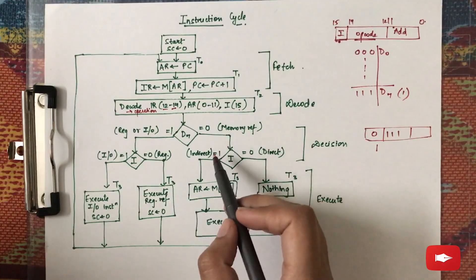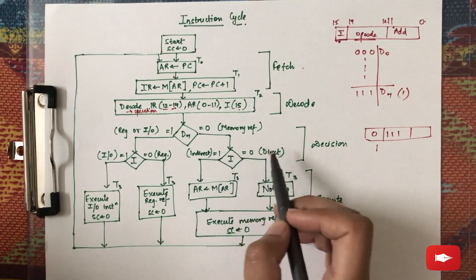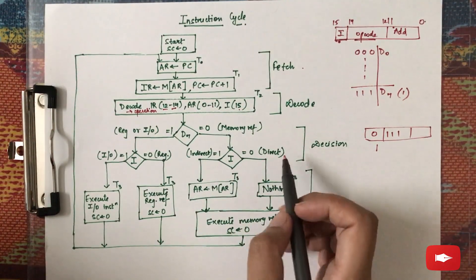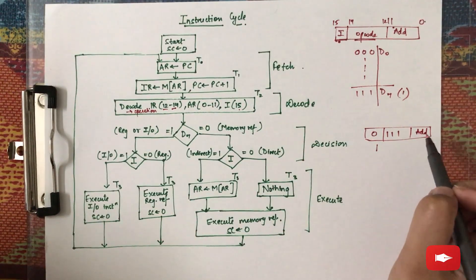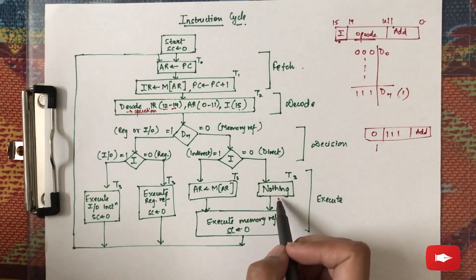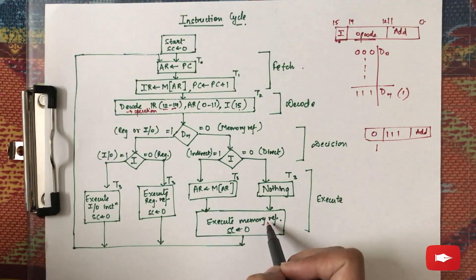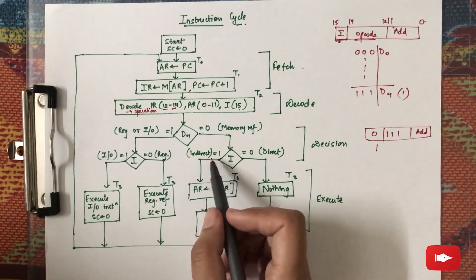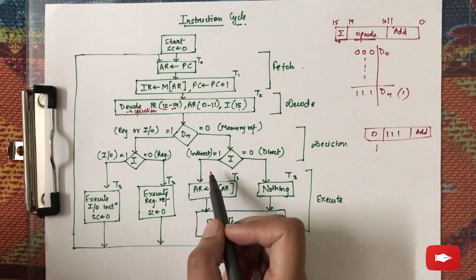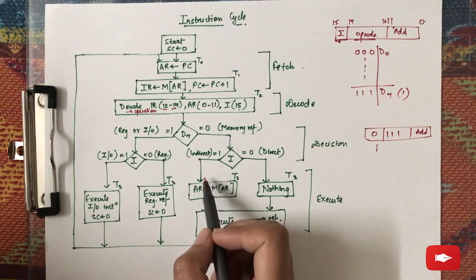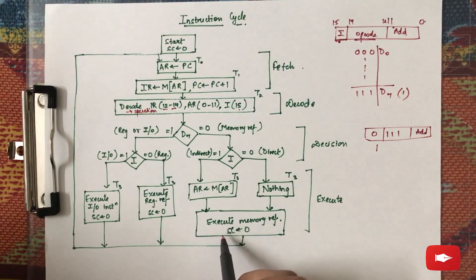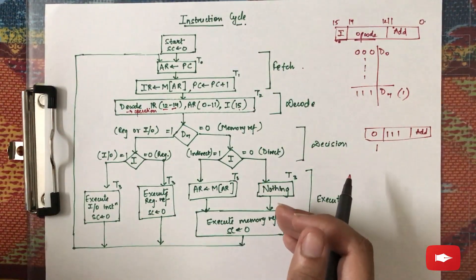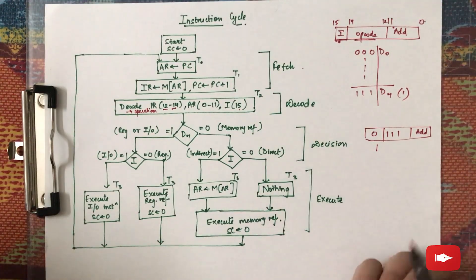For memory reference instructions, the I value — the 15th bit — decides if it is direct or indirect addressing mode. If it is direct addressing mode, nothing extra is done because the address part is the effective address itself, and the memory reference instruction is executed directly. If it is indirect addressing mode, the effective address is first brought to the address register, then the instruction is executed, and the sequence counter is set to zero. These are the four phases of the instruction cycle.